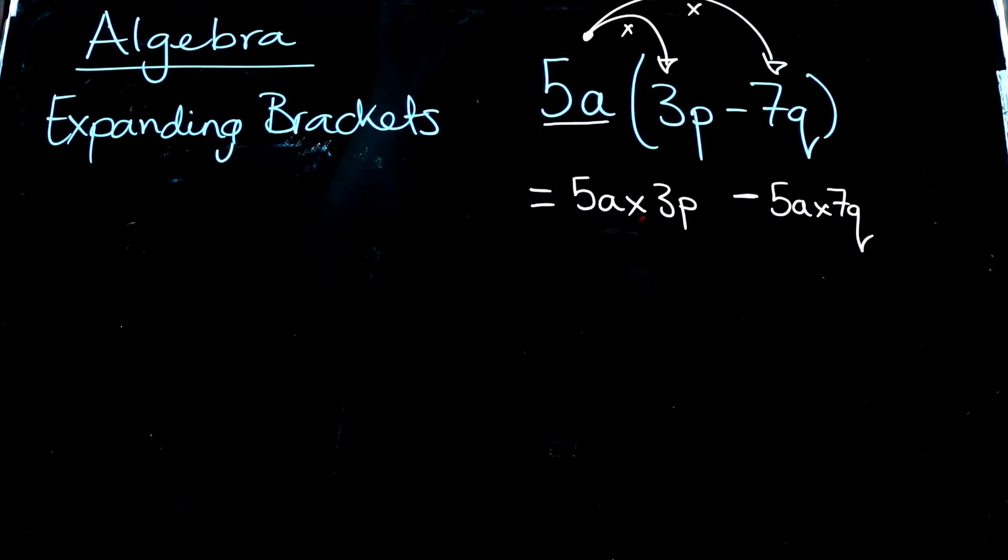I've got a multiply sign here. So let's do the numbers first. We've got 3. 5 times 3 is 15. And now the letters, the pronumerals, we can just write them as a, p. Keep the subtract sign the same. We can do the numbers on this guy here. 5 times 7 is 35. We've got an a and a q. So we just write those down there.